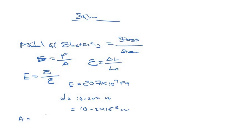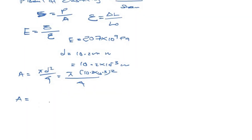Our cross-sectional area is equal to π·d² over 4. Substituting d = 10.2 times 10 to the power of minus 3 meters, we calculate the area to be 8.1713 times 10 to the power of minus 5 square meters.